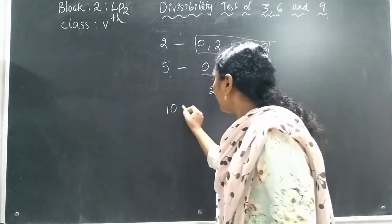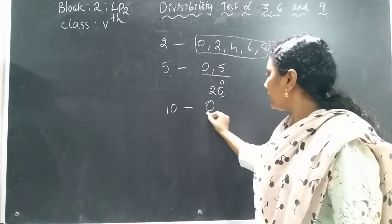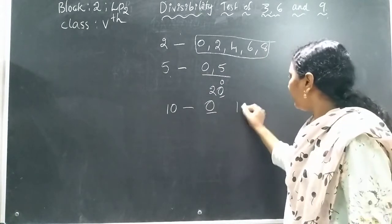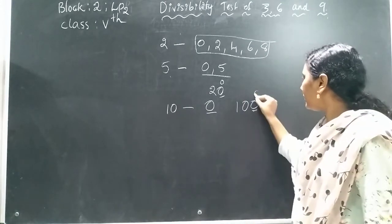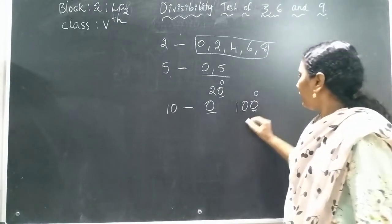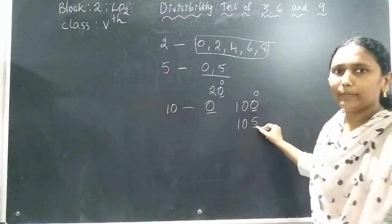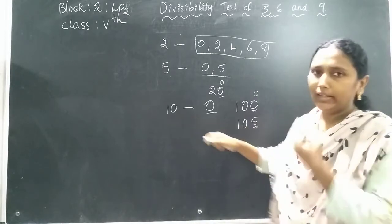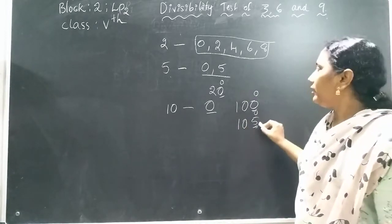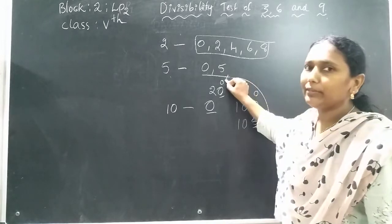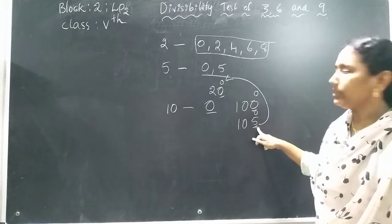For divisibility by 10, the digit we should have at the ones place is 0. For example, 100 is divisible by 10 because its ones place is 0. If 105 is given, it is not divisible by 10 because the ones place is not 0. But 105 is divisible by 5 because there is a 5 at the ones place.